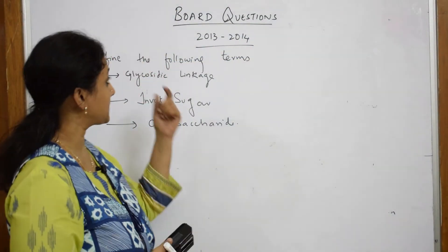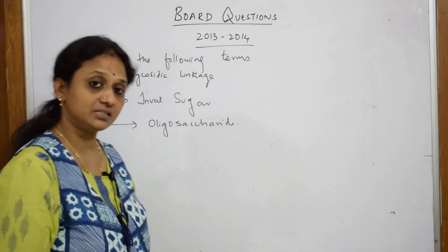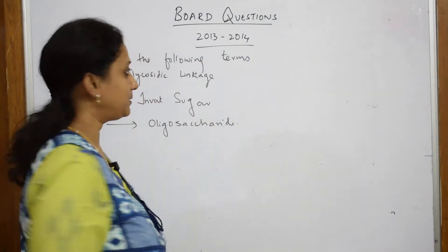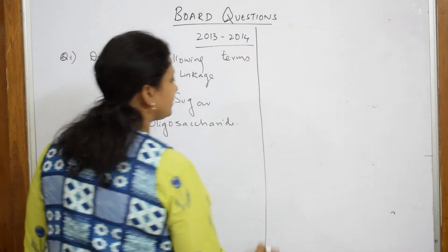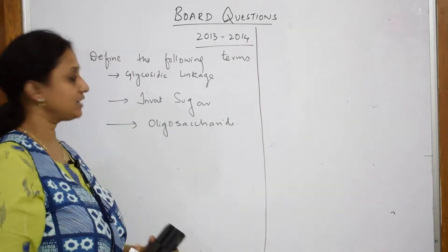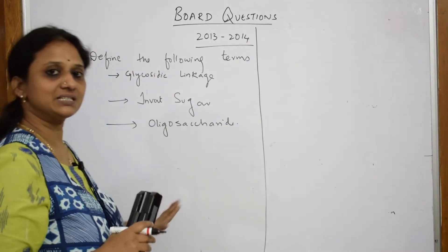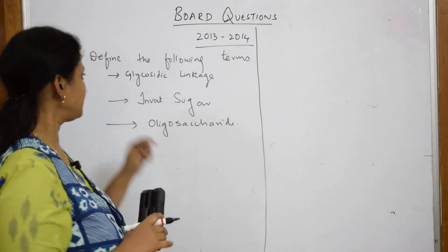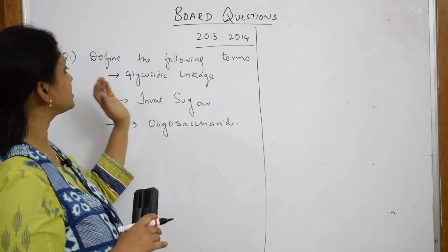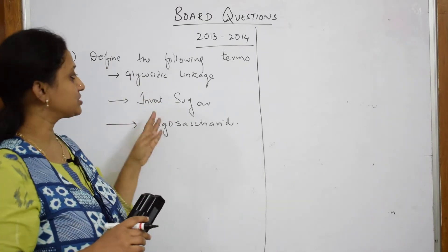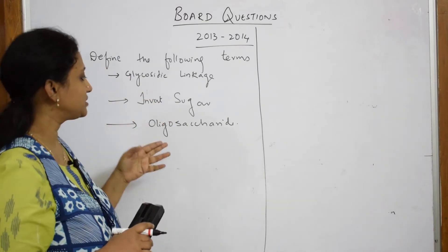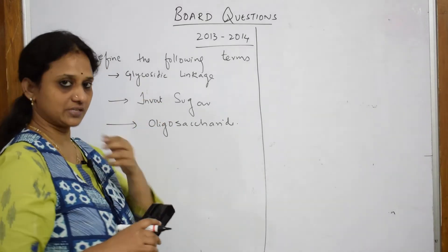Let us do this 2013-14 paper. What do they give us? It is a simple basic direct definition. They have given us: define the following terms — glycosidic linkage, invert sugar, oligosaccharide.